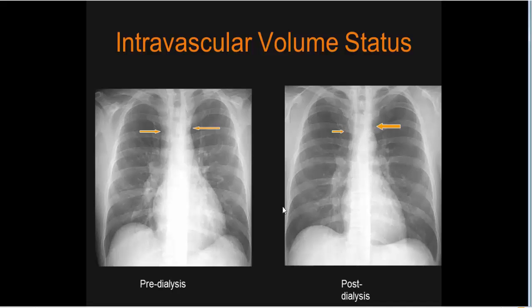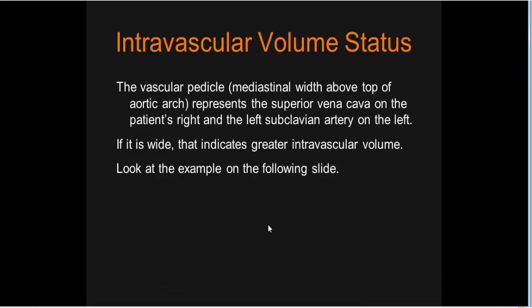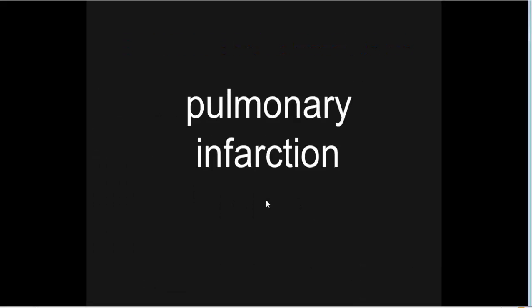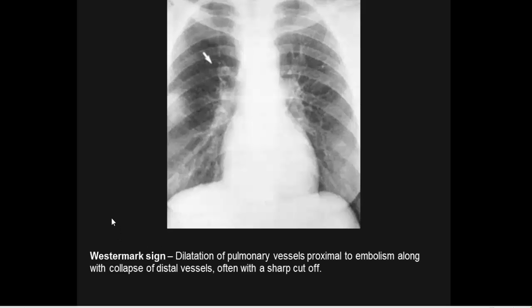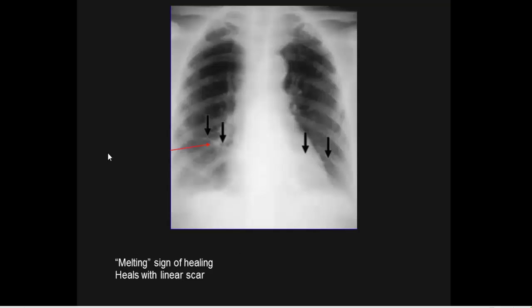Pulmonary infarction: linear density with the Westermark sign — dilatation of the pulmonary vessel proximal to the embolus along with collapse of the distal vessel — is often seen. The short cutoff melting sign indicates healing. Linear scar follows pulmonary infarction.